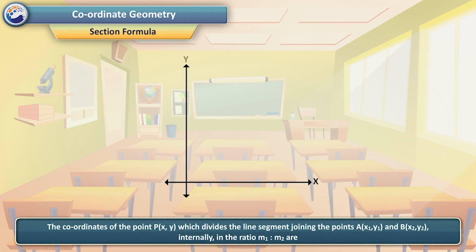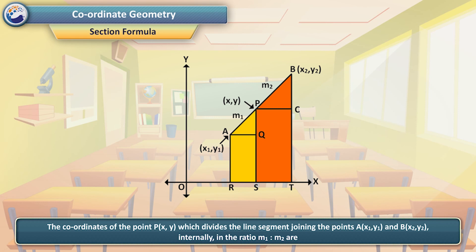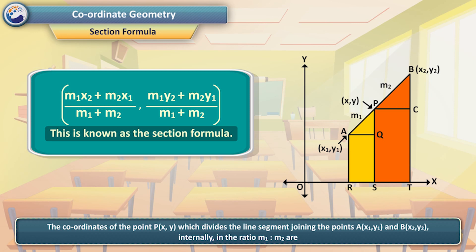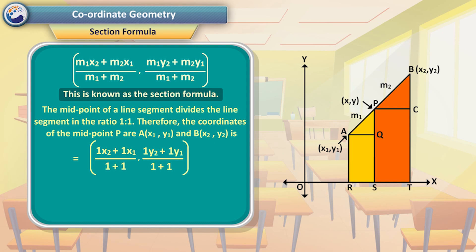Section Formula. The coordinates of the point P(x, y) which divides the line segment joining A(x₁, y₁) and B(x₂, y₂) internally in the ratio m₁ : m₂ are [(m₁x₂ + m₂x₁)/(m₁ + m₂), (m₁y₂ + m₂y₁)/(m₁ + m₂)]. This is known as the section formula. The midpoint of a line segment divides it in the ratio 1:1, so the midpoint coordinates are [(x₁ + x₂)/2, (y₁ + y₂)/2].